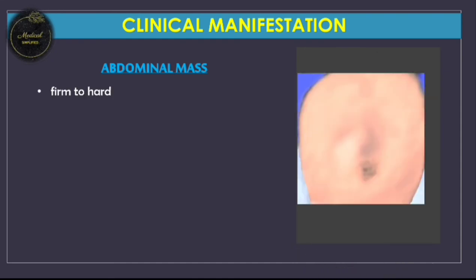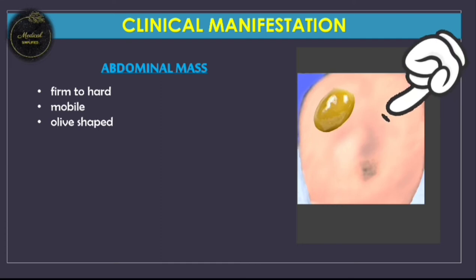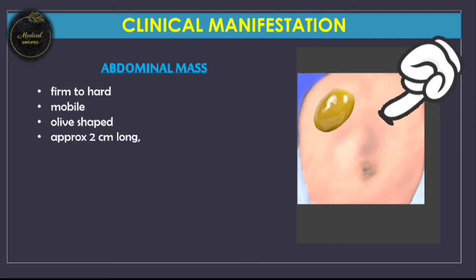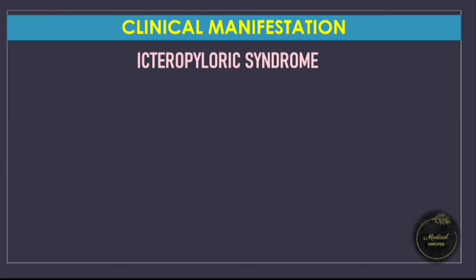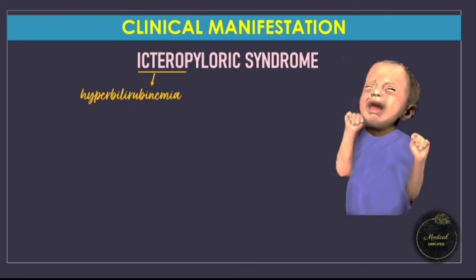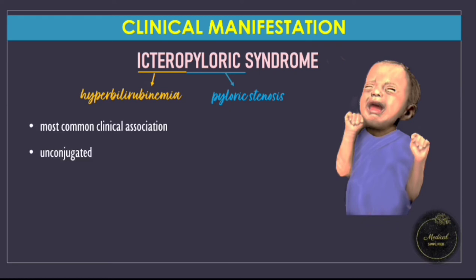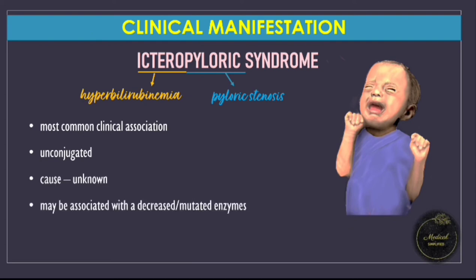The mass ranges from firm to hard, is mobile, olive-shaped, approximately two centimeters long, best palpated from the left side, and located above and to the right of the umbilicus in the epigastrium. The best time to palpate is following an episode of vomiting. A less commonly remembered association is icteropyloric syndrome — unconjugated hyperbilirubinemia in a child with pyloric stenosis, thought to be due to decreased or mutated conjugation enzymes. Jaundice resolves with surgery.